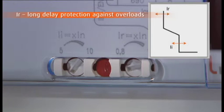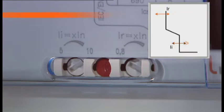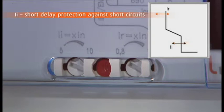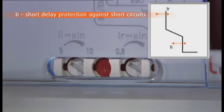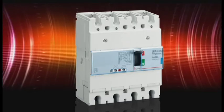The tripping unit of the Thermal Magnetic MCCBs allows easy adjustment of thresholds for protection against overloads and short circuits, in order to optimize selectivity when tripping.